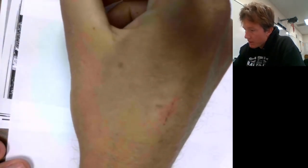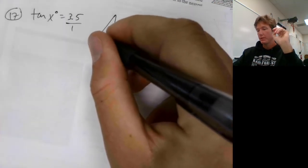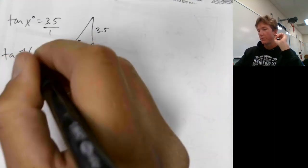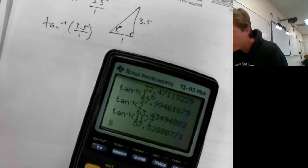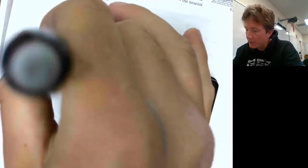Let's look at number 17: find the missing value to the nearest tenth. Tangent of X equals 3.5. Recall that tangent is opposite over adjacent, so I can think of this as 3.5 over 1. To figure out what X is, all I need to do is the inverse tangent of opposite over adjacent. Inverse tangent of 3.5 is 74 degrees. And since they want it to the nearest tenth, that would be 74.1.